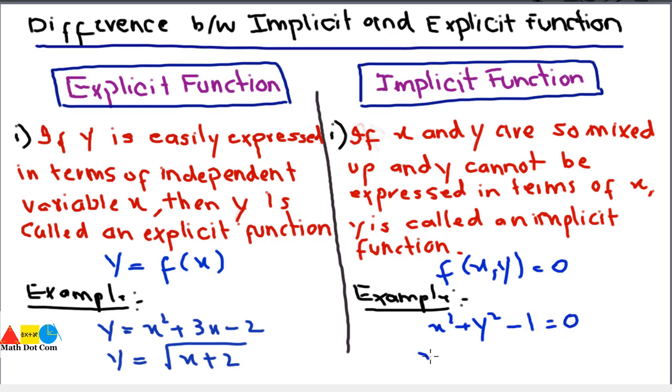Another one is x squared plus xy plus y squared equals 2. These are two examples of implicit function. Now keep one thing in mind: we can convert these implicit functions into explicit functions by simplifying them.